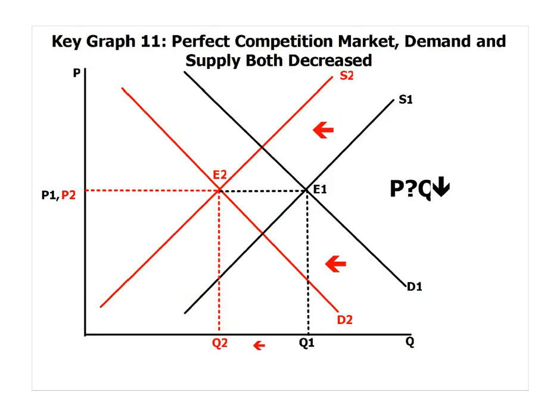For key graph 11, feel free to pause the video and write down the graph in your graphing notebook before continuing. Key graph 11 is the opposite of key graph 10. Maybe a shortage of an input, or a subsidy taken away by the government, or a tax imposed, leads to the supply curve shifting to the left. And perhaps there are problems or bugs within the product being sold, leading to a shift in demand to the left. This leads to a smaller quantity, but a price level that is also indeterminate. When supply and demand are moving in the same direction, price is indeterminate — the same as we saw in key graph 10.